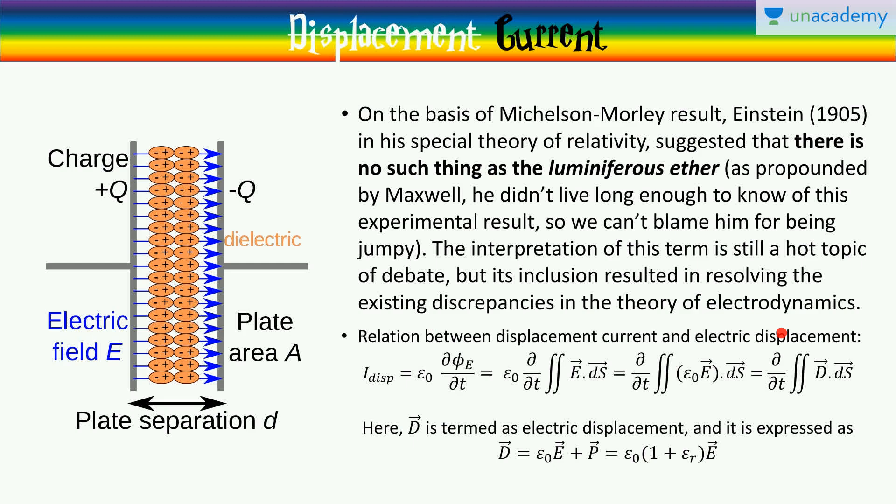Now, this diagram shows you how polarization would have affected the displacement current. But if there is vacuum in between the capacitor plates, there is no polarization. There is no displacement of charges. So, what is happening? What is this electric displacement?